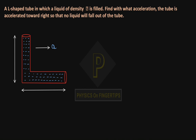The question is about an L-shaped tube in which a liquid of density rho is filled. With what acceleration is the tube accelerated toward the right so that no liquid will fall out of the tube?